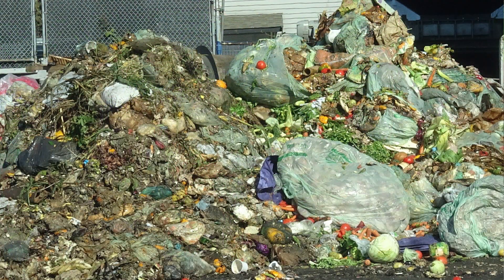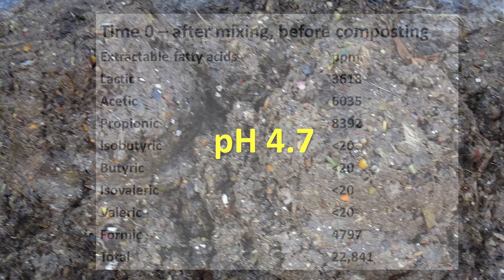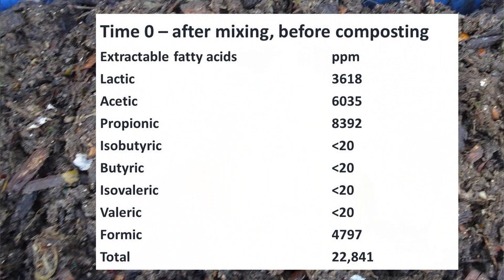Let's take some commercial food waste. We don't know how long it's been stored before it was delivered. The pH of the waste is 4.7, and here's the volatile fatty acid profile of the waste after it's been mixed and it's ready for composting. The acetic acid is 6,000 parts per million and the propionic acid is 8,400 parts per million, and there are no butyric or valeric acids in these food scraps.